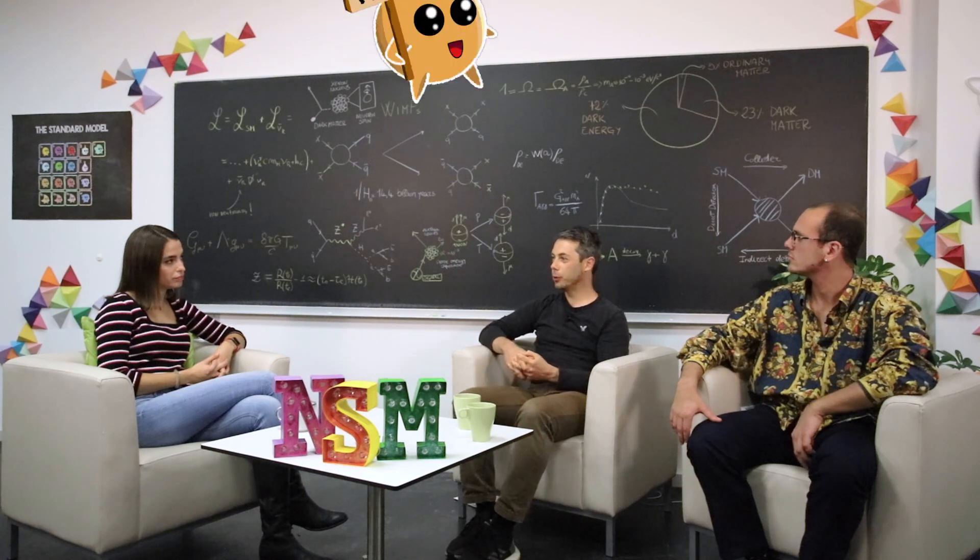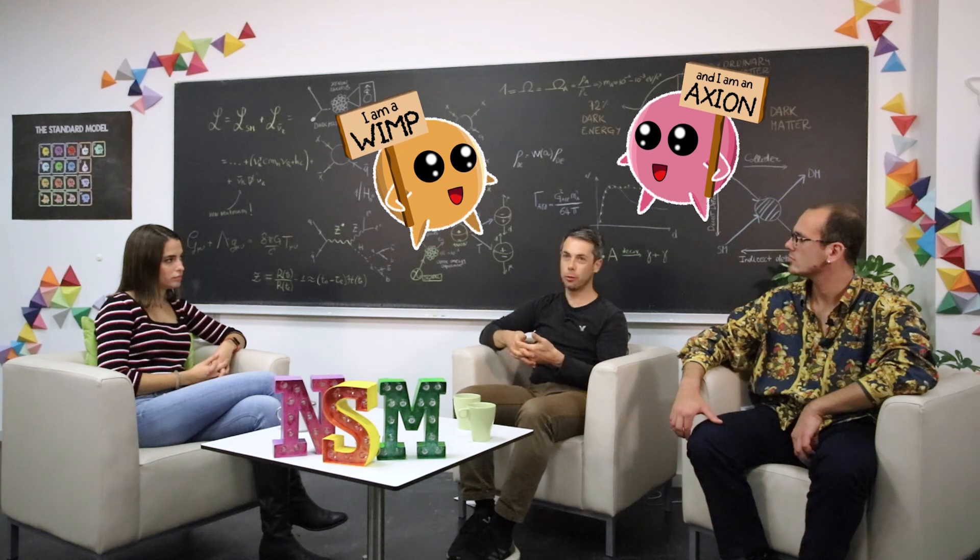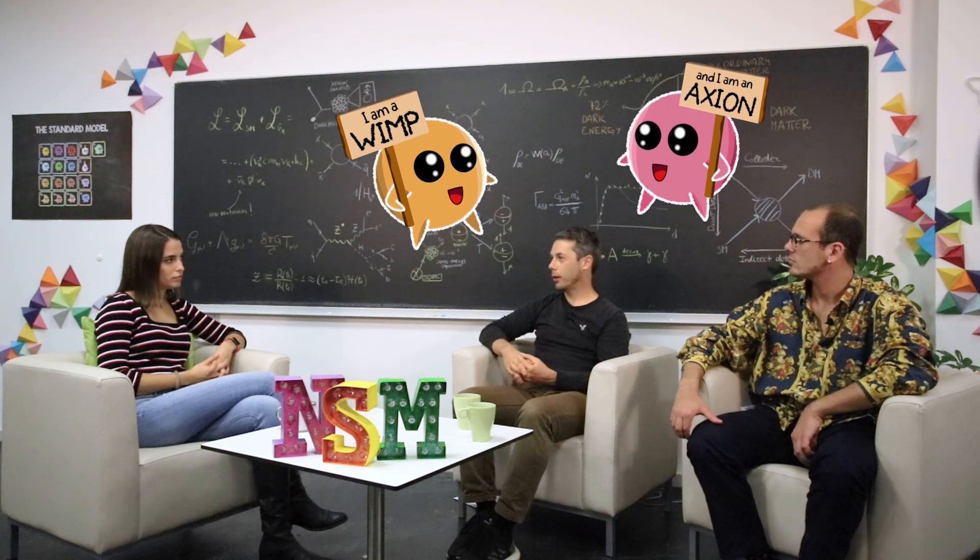Yeah, well, there are two of the most promising models, which are the weakly interacting massive particles. They're called WIMPs or something that we call axions.